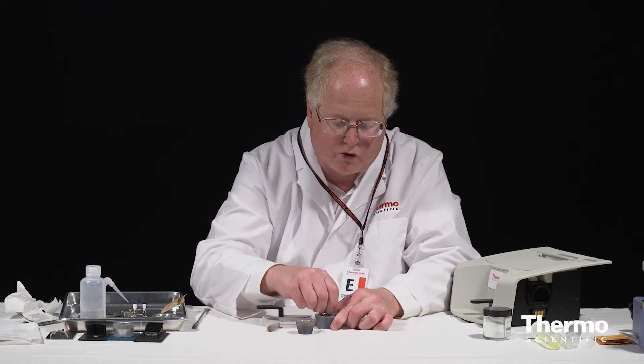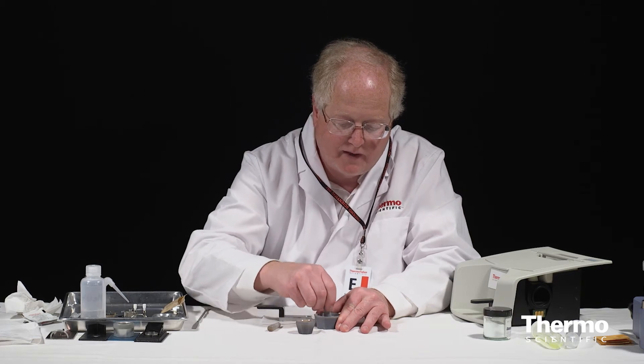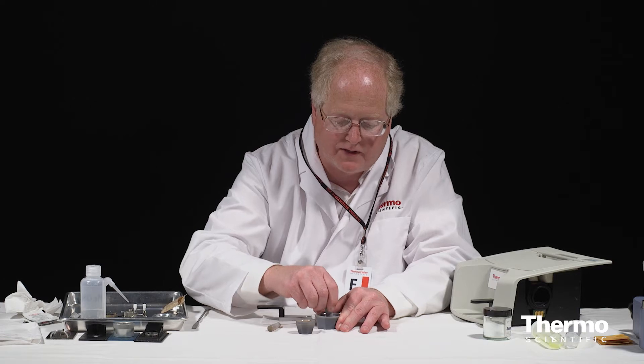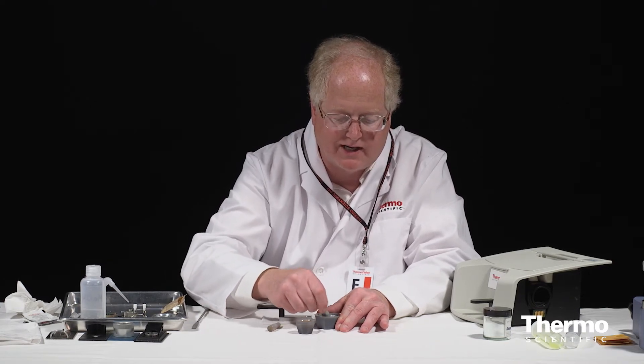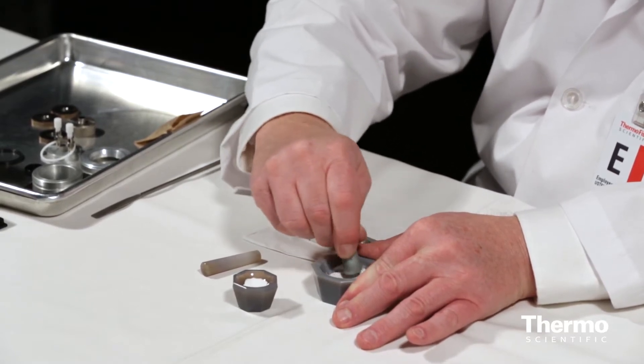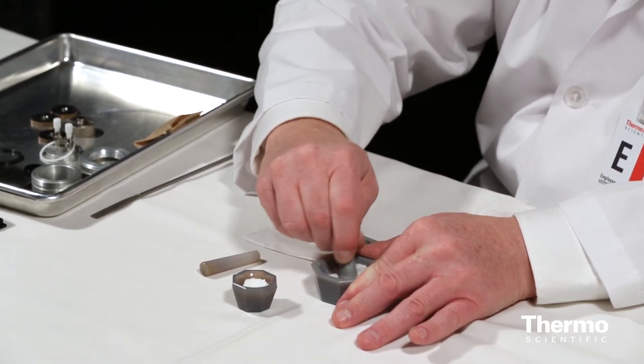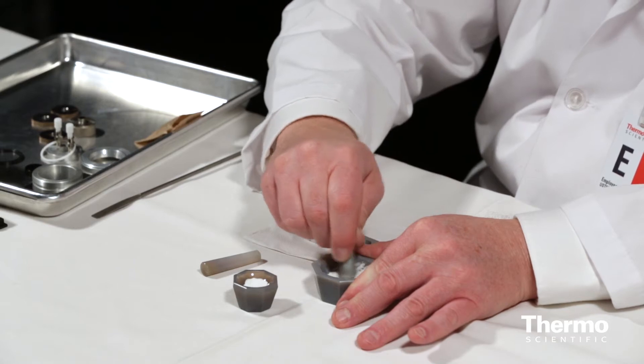Now the grinding is going to do two things. First of all, it's going to make the crystal size or the particle size consistent. It's going to give me a more diffuse reflecting surface. And secondly, it also serves to homogenize the sample, to mix the sample and the potassium bromide together in there into the powder.